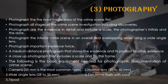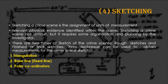Sketching a crime scene is the assignment of units of measurements where relevant physical evidence is identified within the scene. Sketching is not difficult but requires some organization and planning by the investigator. There are two types of crime scene sketches: the rough sketch and the final sketch. There are three techniques for obtaining measurements: first is triangulation, second is the baseline or fixed line method, and third is the polar coordinates method.